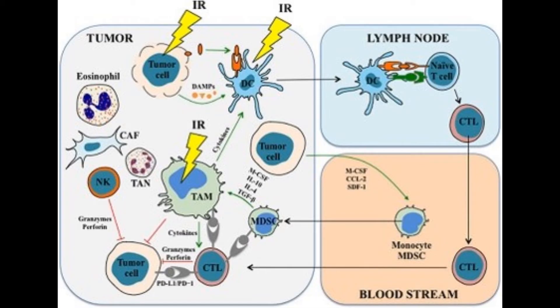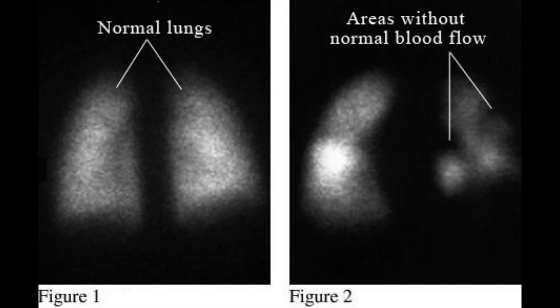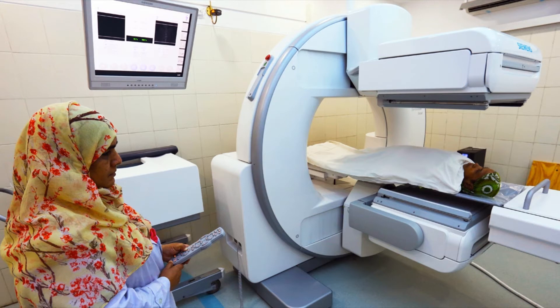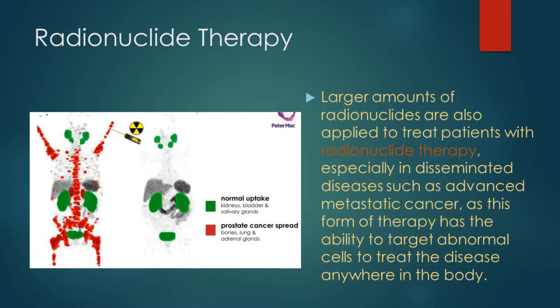Nuclear medicine is used in physiology research: cellular metabolism, DNA proliferation, blood flow in organs, organ function, receptor expression, and abnormal physiology — detected externally using sensitive imaging devices. Larger amounts of radionuclides are also applied to treat patients with radionuclide therapy, especially in disseminated diseases such as advanced metastatic cancer, as this form of therapy has the ability to target abnormal cells to treat the disease anywhere in the body.